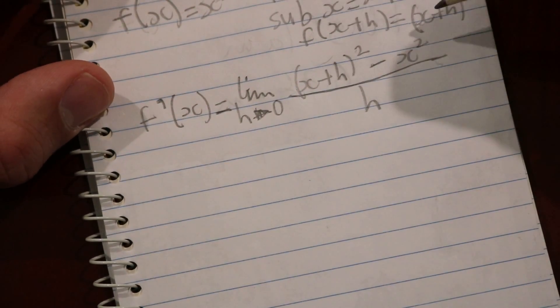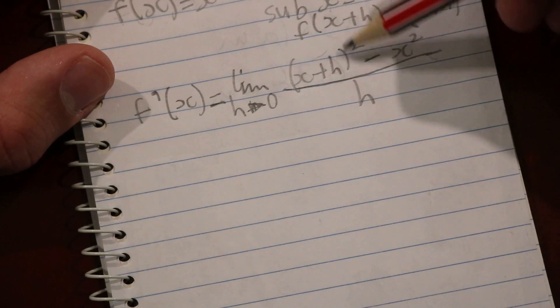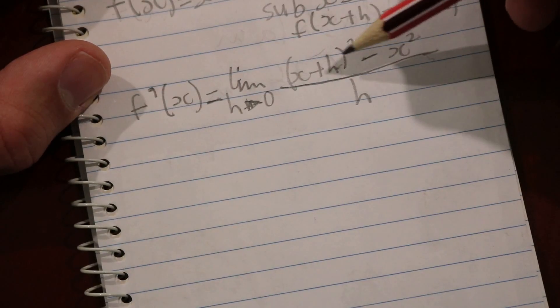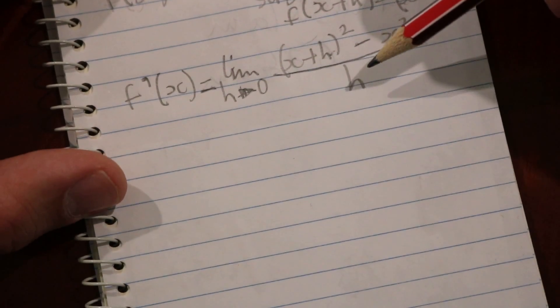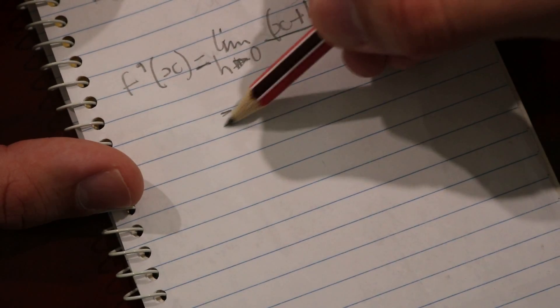From this, we'll rearrange it. We'll expand this bracket, and then cancel each value until we get the derivative of x². So let's do that.